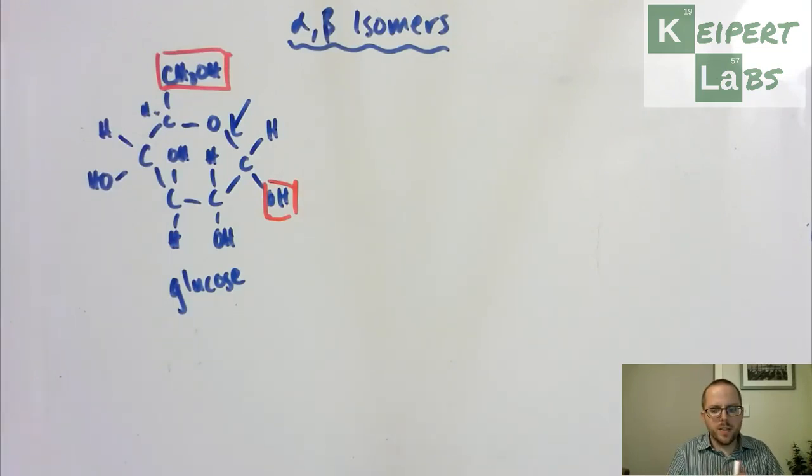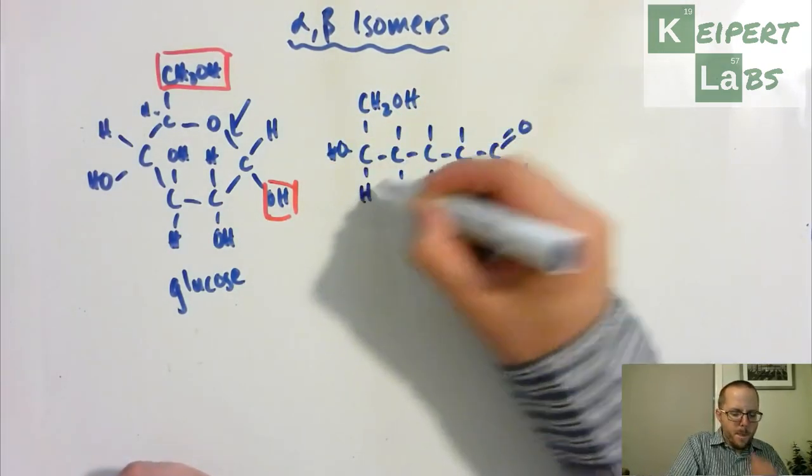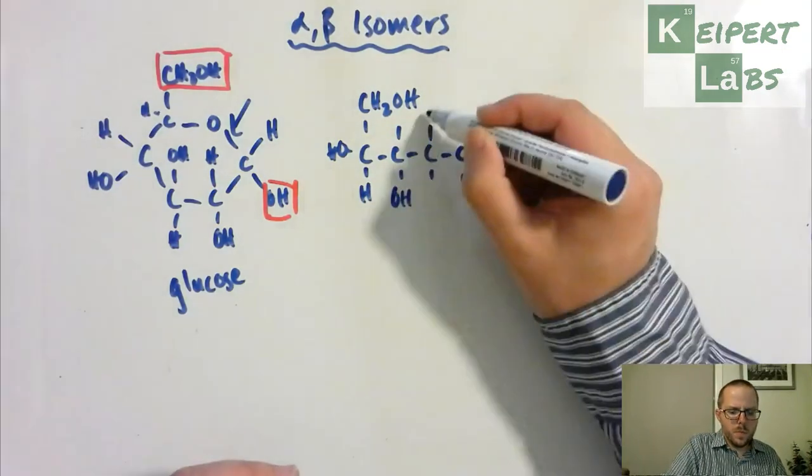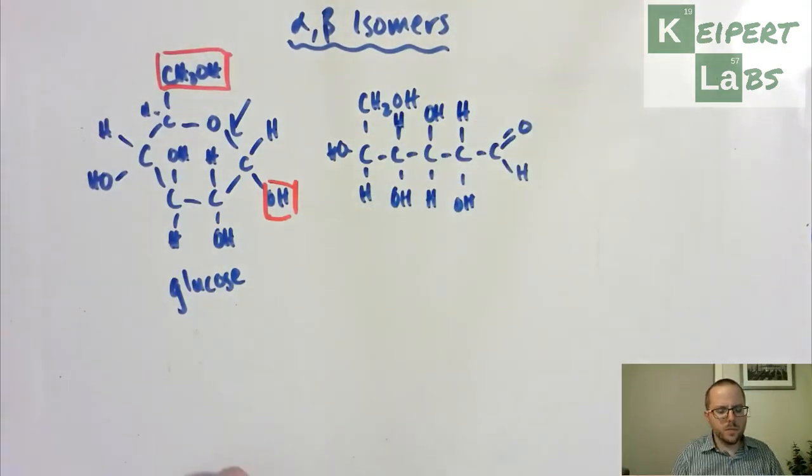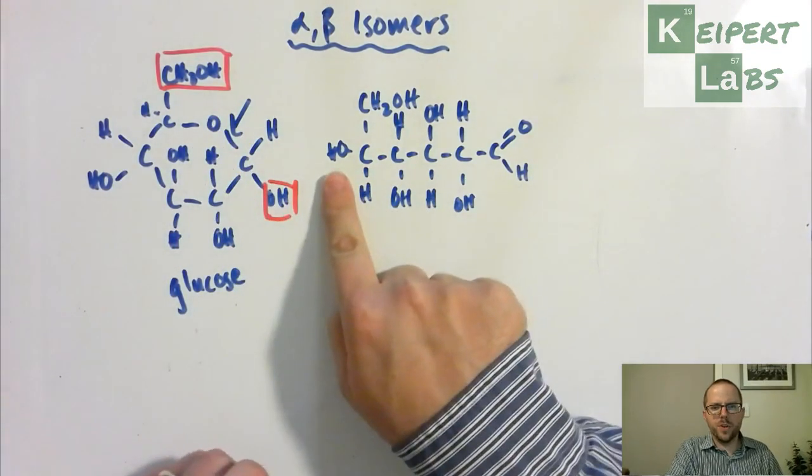And so what we see with that open chain version, I'll draw it for you now. Remember that this oxygen in the ring here comes from this OH group that's over on the side.